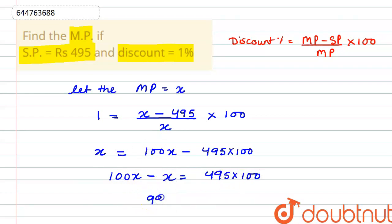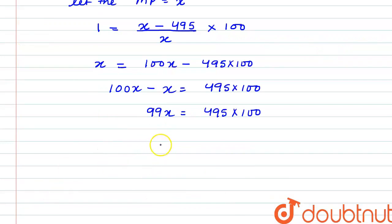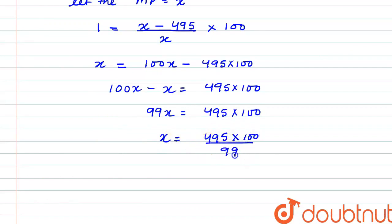We can write 99x is equal to 495 multiplied by 100. So x is equal to 495 multiplied by 100, divided by 99. Since 99 divides 495 by 5, our value of x is 500.